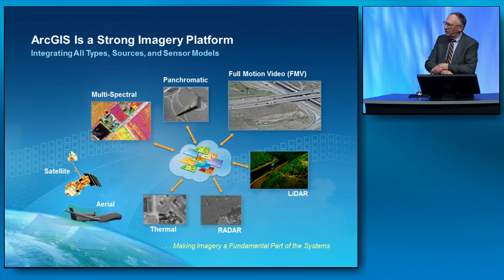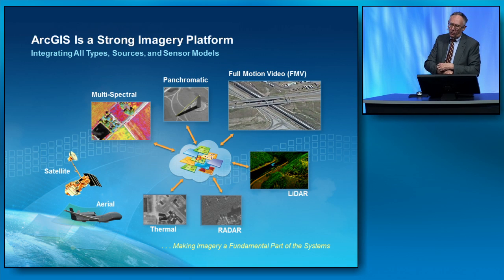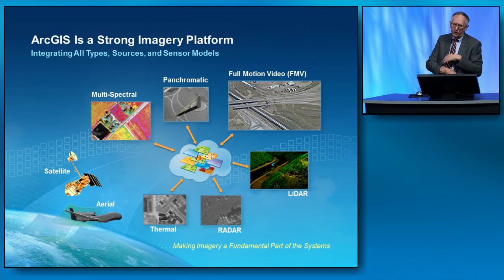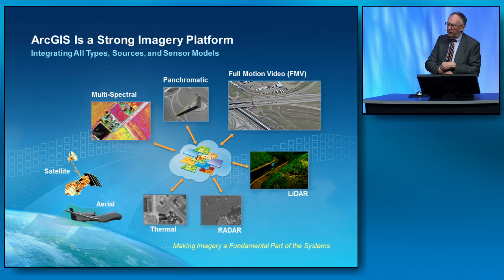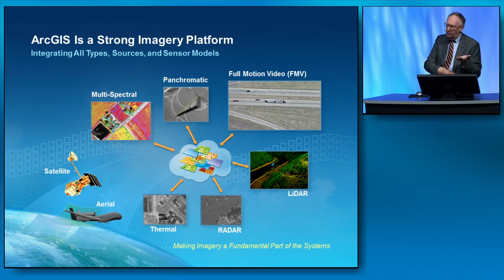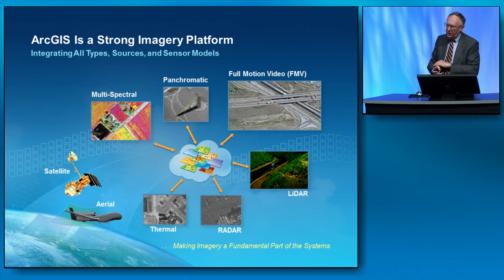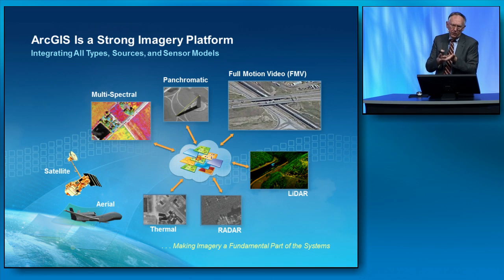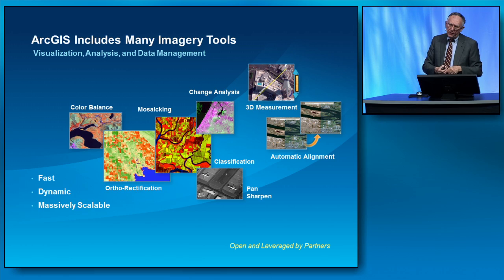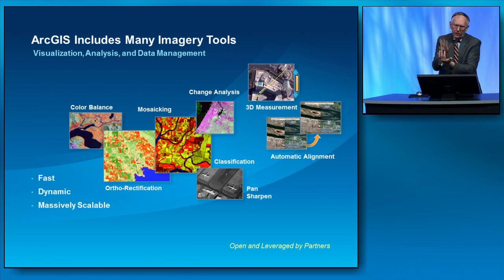ArcGIS has also got a few other stories. One of them is it's a strong imagery platform. It now reads all imagery types with different sensor models from different sources — aerial imagery. And it's not just something on the side. It's actually been engineered and implemented as being part of the core platform. It has many image processing tools for visualization and analytics, data management. So instead of having two screens on your desktop, it's just one integrated system.